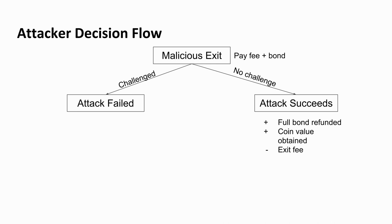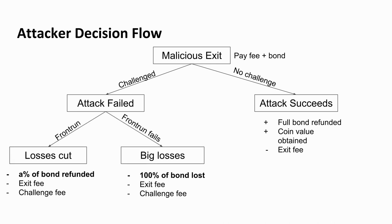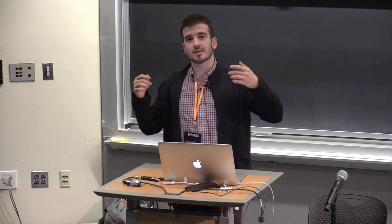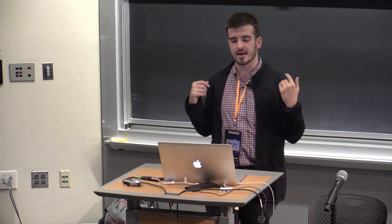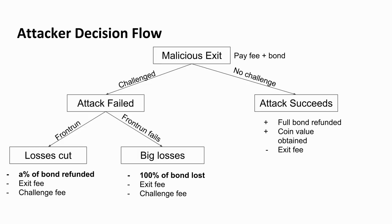The attacker decision flow: I start an exit and there are two scenarios. Either the attack fails because somebody managed to challenge, or it doesn't. If it doesn't fail, I get my security bond back, I get the coin, and I paid some gas fees — the attacker goes away and the Plasma is broken. If the attacker fails, they may try to front-run: the attacker exits, the challenger challenges, and the attacker tries to front-run the challenge by challenging themselves. If they manage to front-run, they get their security bond back and can keep attacking. So alternatively, we burn a part of the bond — if the security deposit was 10 ETH, they only get back 3 ETH — which prevents the front-running attack.